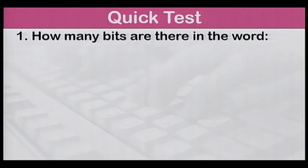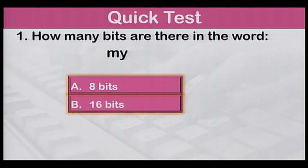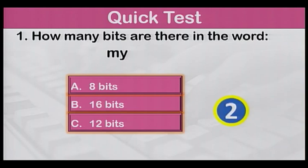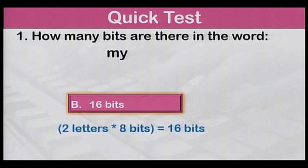Now, to evaluate what you have learned today, let us do a quick test with some multiple choice questions followed by a true-false exercise. Number one: How many bits are there in the word MY? A: 8 bits, B: 16 bits, or C: 12 bits? The answer is B, 16 bits. There are two letters in the word MY. Two times eight is equal to 16.